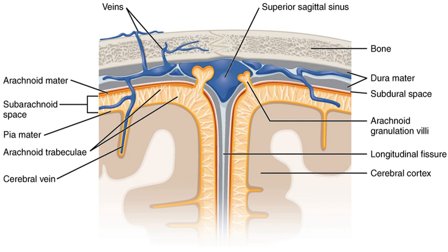The dura mater (Latin: 'tough mother', also rarely called meninx fibrosa or pachymeninx) is a thick, durable membrane closest to the skull and vertebrae. The dura mater, the outermost part, is a loosely arranged fibroelastic layer of cells, characterized by multiple interdigitating cell processes, no extracellular collagen, and significant extracellular spaces. The middle region is a mostly fibrous portion.